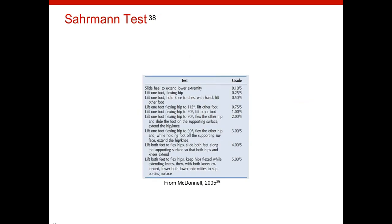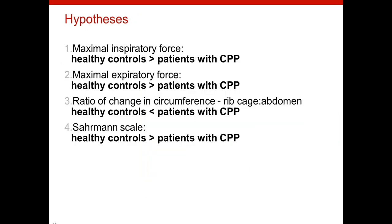The last measurement we took was the Sahrmann test, which is a progression performed in supine designed to challenge the lower abdominals. Our hypotheses were that healthy controls would perform better on the MIP, MEP, and Sahrmann tests, and that they would demonstrate a higher contribution of the abdomen to their breathing — a smaller ratio — compared to patients with chronic pelvic pain.